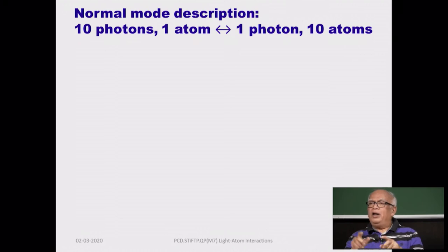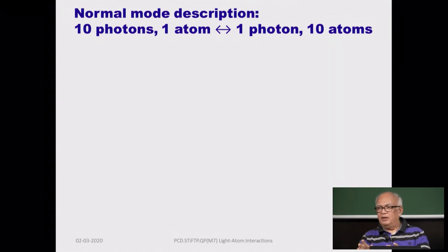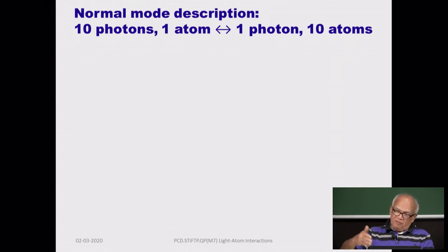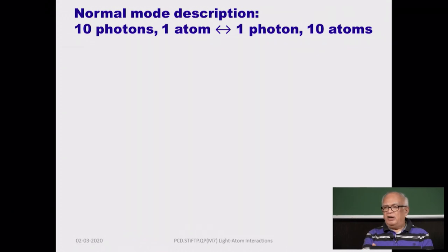When you talk about entangled states, if you had one atom and ten photons or ten atoms and one photon, the situation would be exactly the same. The corresponding Rabi frequency is then scaled by the same factor √(n+1), where n is now the number of atoms rather than photons. So you can have n atoms and one photon, or n photons and one atom, and you have the same mathematics.